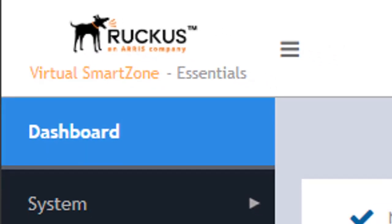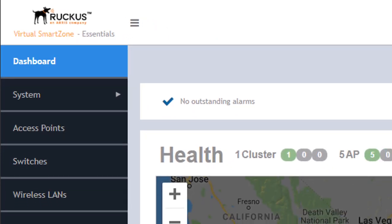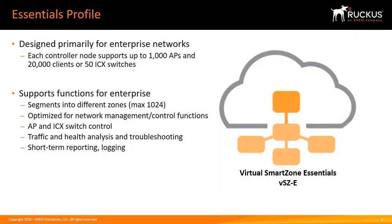Essential deployments commonly support enterprise, hospitality, education, retail, healthcare, and many other market types including some small-scale managed service providers. Single nodes can support up to 1,000 APs and 20,000 clients or 50 ICX switches. Network management and control functions are available along with health analysis and troubleshooting. Short-term reporting is also stored with the option to report to external services such as Ruckus SmartZone Insight and other third-party applications.